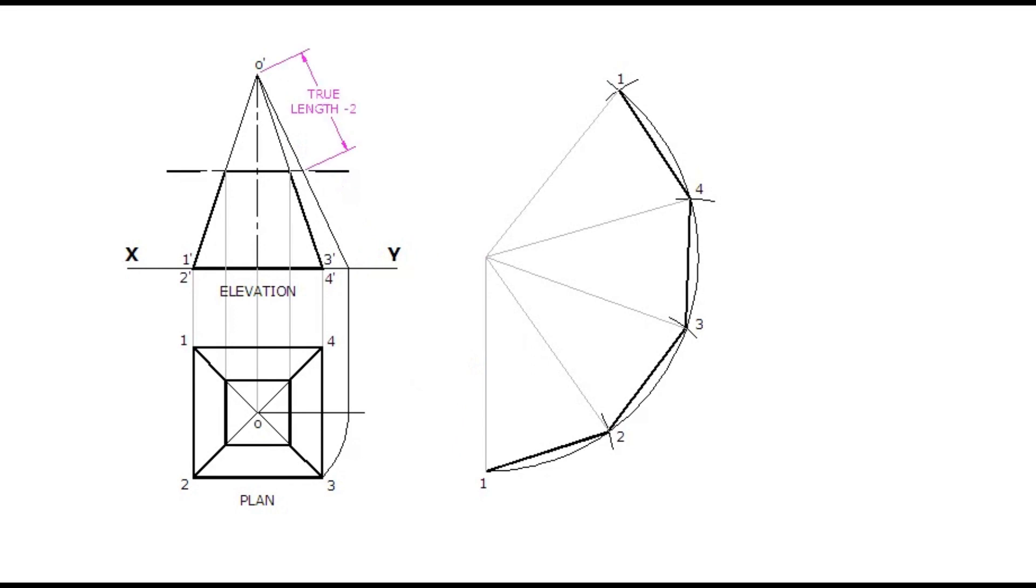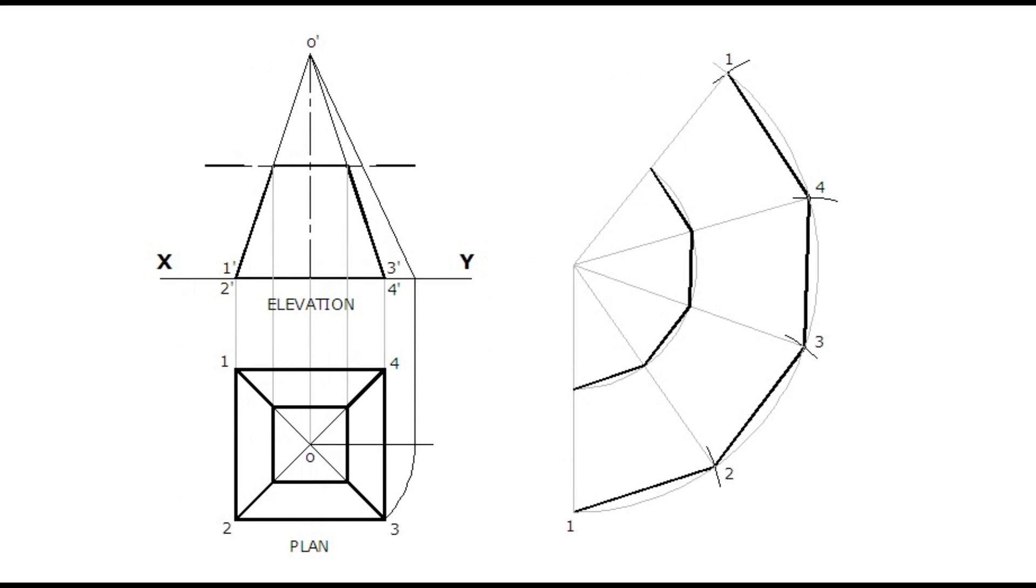After drawing development of the complete pyramid, the slant edge length of top portion is to be measured. Draw a second radial arc. The intersection points of this arc with the radial lines are to be joined by straight lines. Darken only the required portion of development.